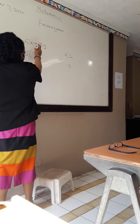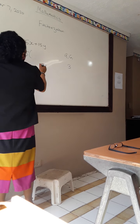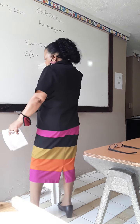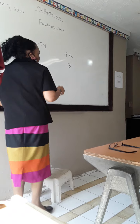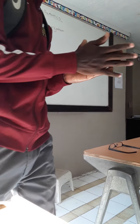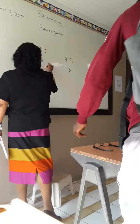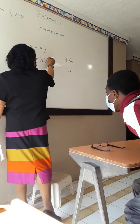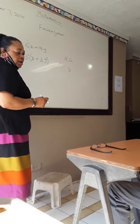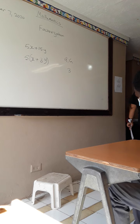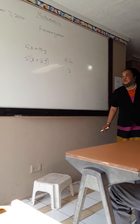5 into 5x would leave me with x. And 5 into 15 — 5 into 15 would leave me with 3. And so this would have been 3, and the y would hold its place. We're talking about factorization. So I'm simply factorizing this.